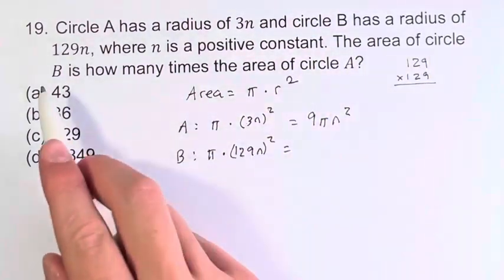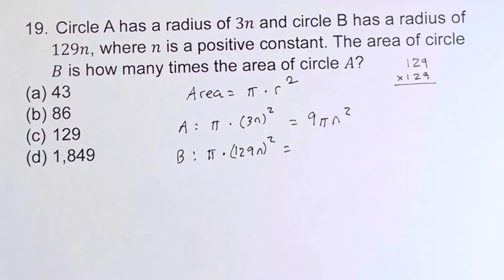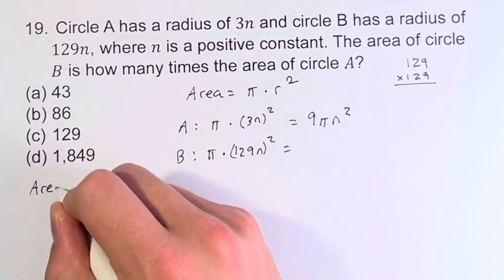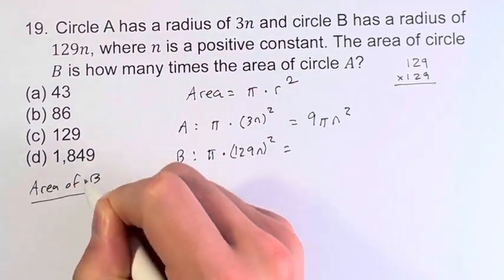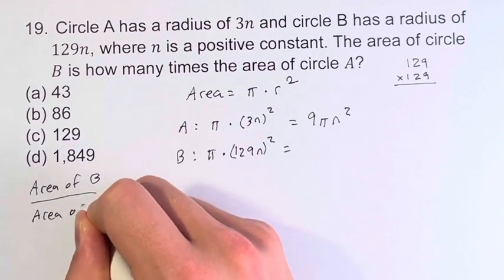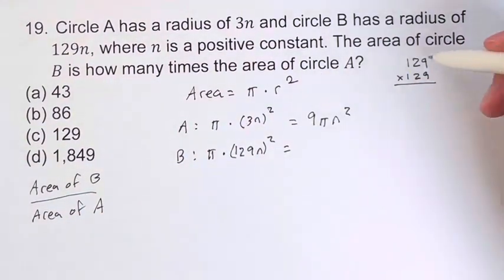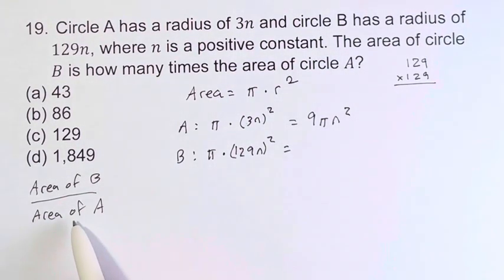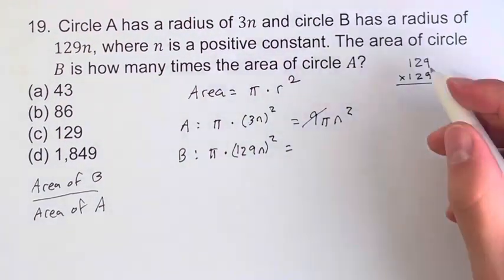Well, we're looking for how many times the area of circle B is the area of circle A. So we're going to take the area of B and divide it by the area of A. Whatever this big number is, we're going to have to divide it by 9 anyway, since the 9 is in the denominator. So instead, we'll just get rid of this 9 and divide it out here.